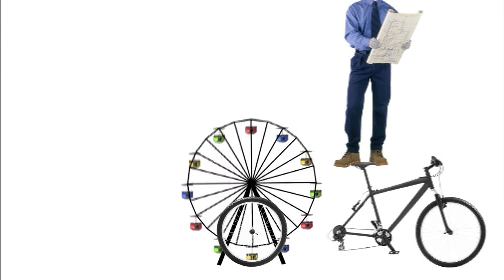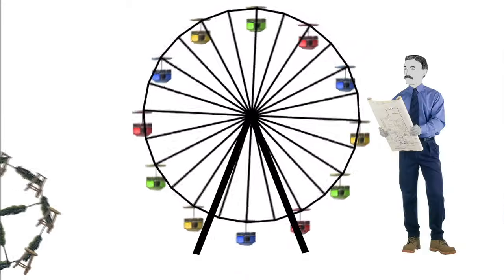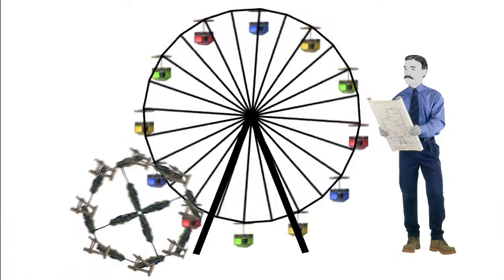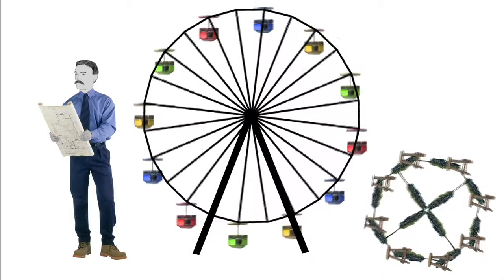The wheel resembled the wheels you'd see on a bicycle. It had spokes radiating from the axle to reinforce the shape and stability of the wheel. Although people had previously designed smaller, similar contraptions out of wood, George's design was different in several important ways.